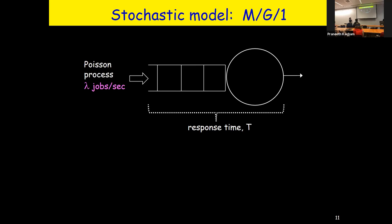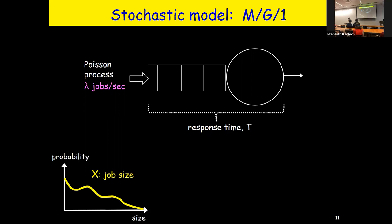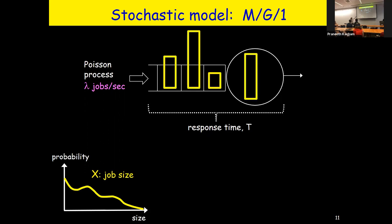We look at this whole queue in a stochastic setting called the MG1 model. The M means the arrival process is a Poisson process — jobs come in at a constant rate lambda per second. The G means job sizes come from a general distribution; X is a random variable denoting job size, and this can be any distribution. Job sizes are picked IID from this distribution — some are big, some are small. At any moment in time, jobs may be partially done with some attained service and some remaining size, and preemption is free.